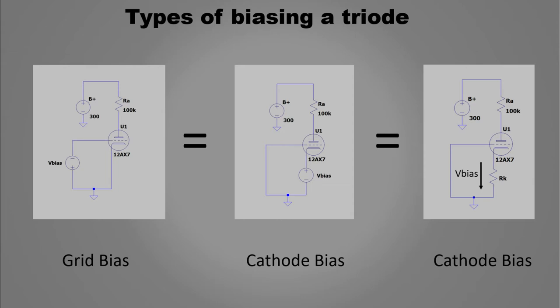First let's check how to bias a triode. We must remember that bias voltage in a triode is the difference between grid and cathode voltage.